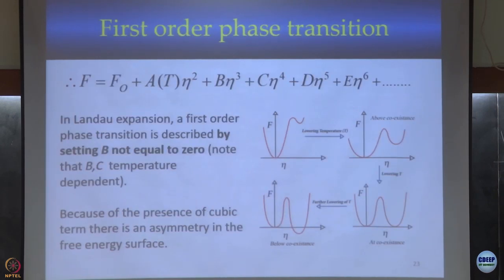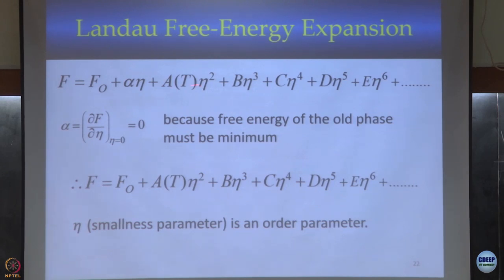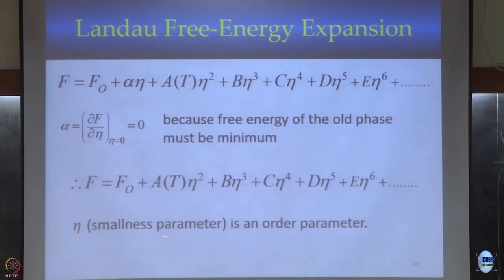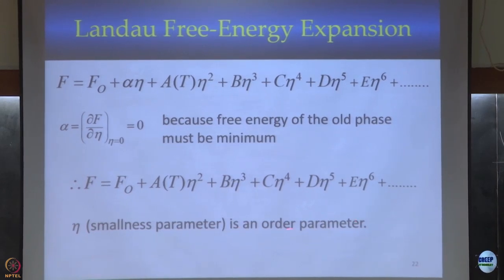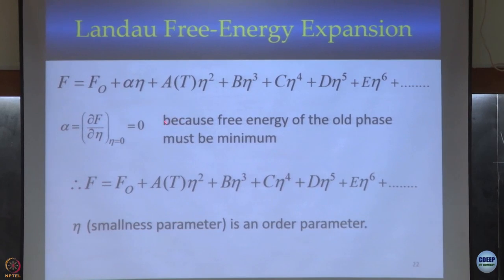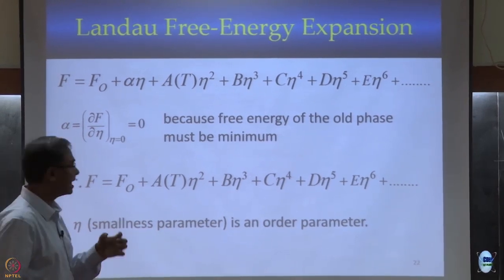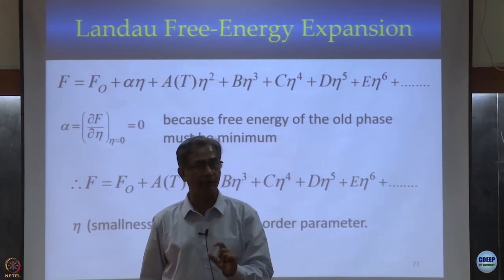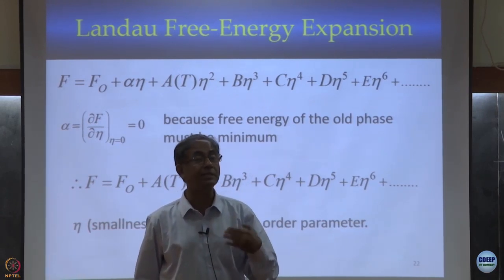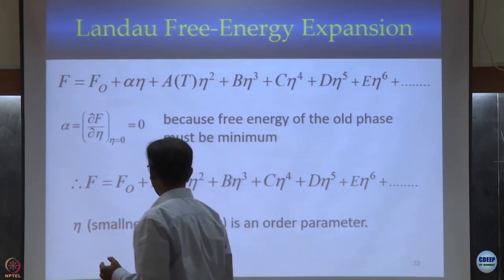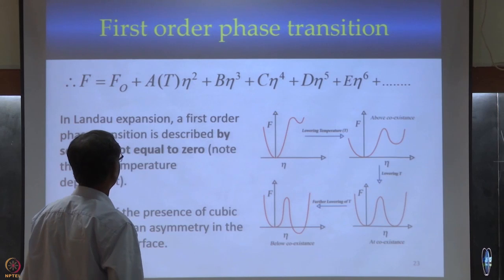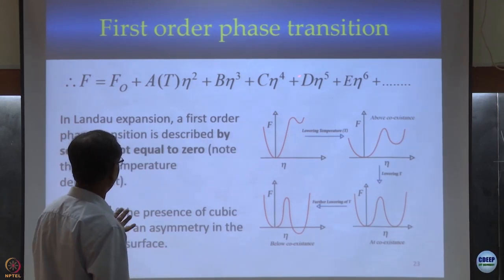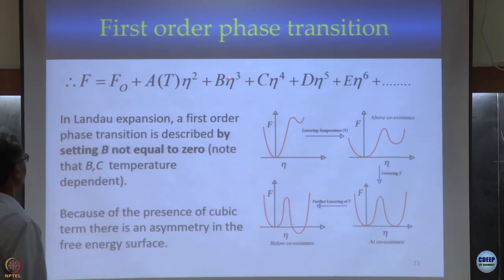Let us now do the Landau theory quickly. Knowing that free energy surfaces are very different for the two types, Landau trivially included this. First important thing: an order parameter is introduced so that I can expand the free energy. The order parameter is the change — a smallness parameter — and the Taylor expansion is done in that change. In f(x+a), the order parameter a is what you expand around.